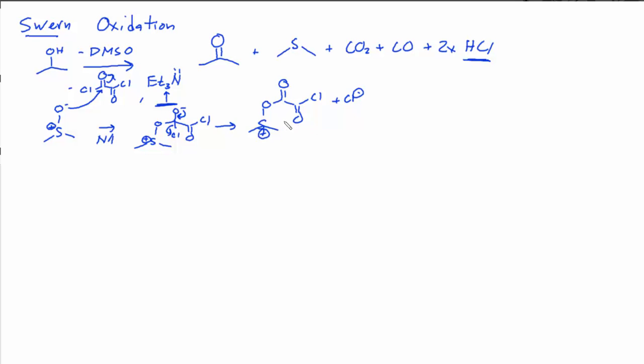And then we can actually take that chloride byproduct and do sort of a substitution reaction. So here we have nucleophilic attack, and now we're forming the CO2 and the CO, and another chloride.